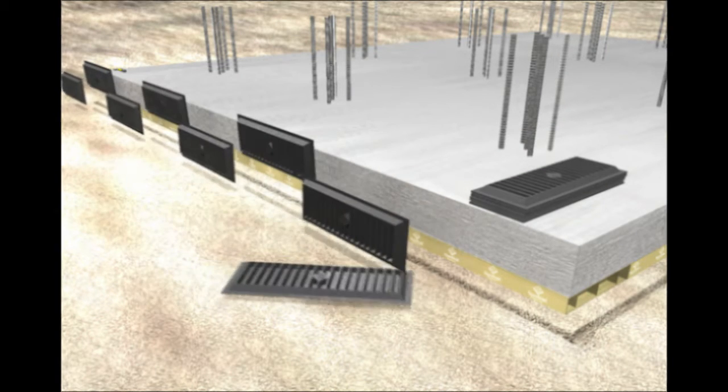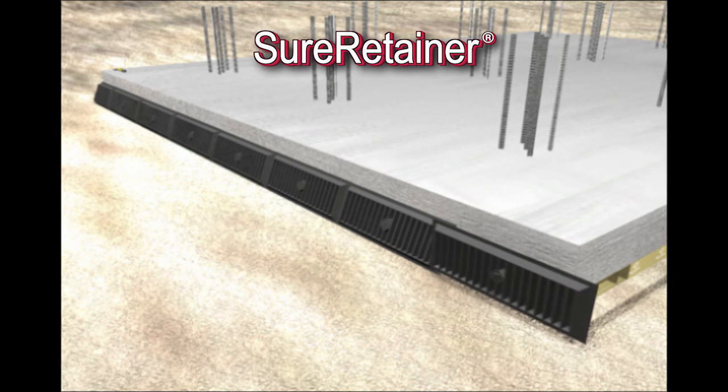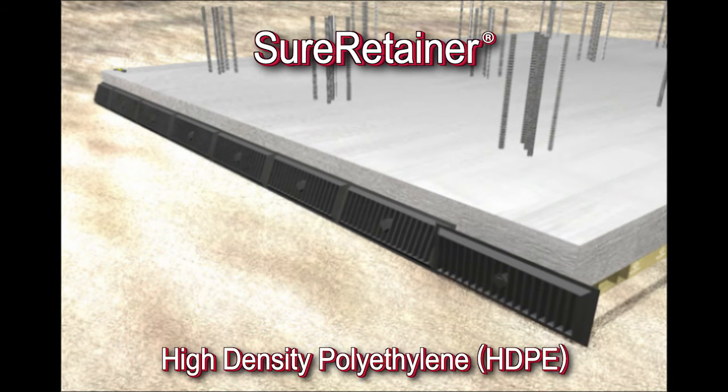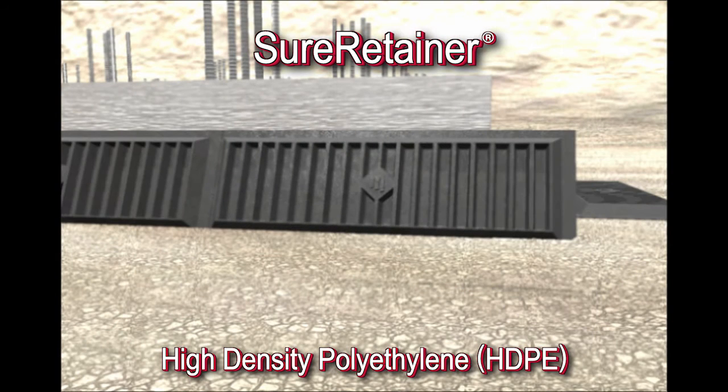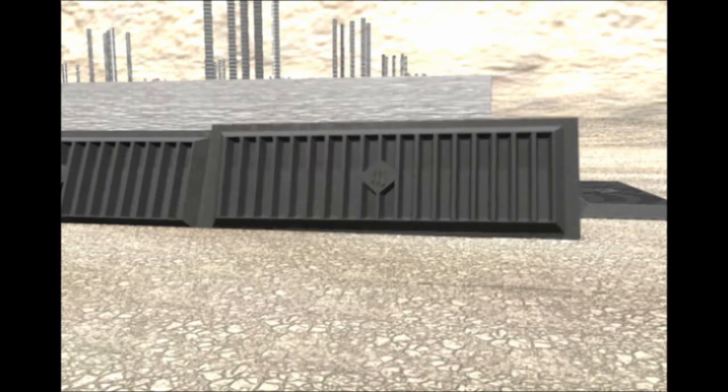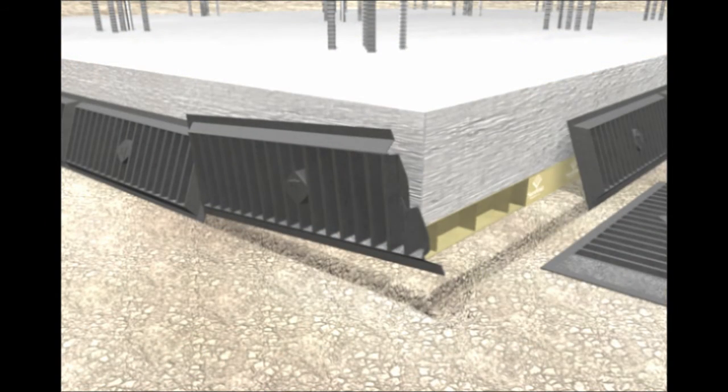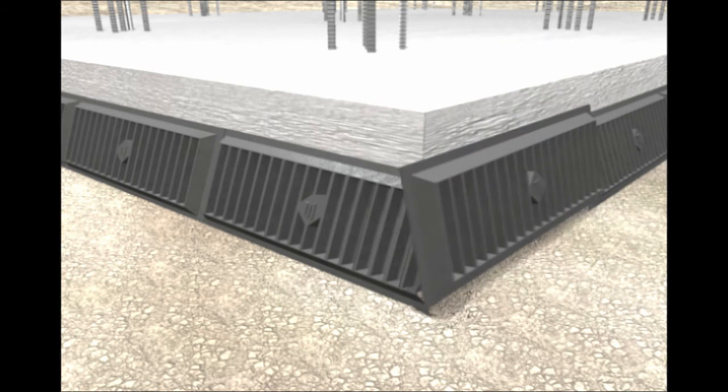Another important component of the Slabvoid system is a product called Sure Retainer. This material is made from high-density polyethylene or HDPE that is a molded plastic form. It is lightweight and easily positioned in the groove as shown. All pieces are overlapped as they are placed around the entire slab perimeter.